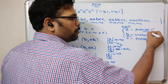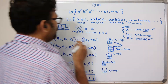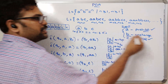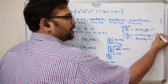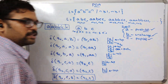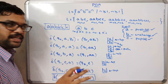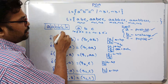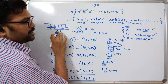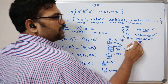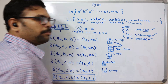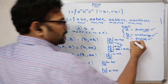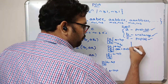To summarize: whenever the input symbol is 'a', we apply the push operation; whenever the input symbol is 'b', there is no change; and whenever the input is 'c', we apply the pop operation.